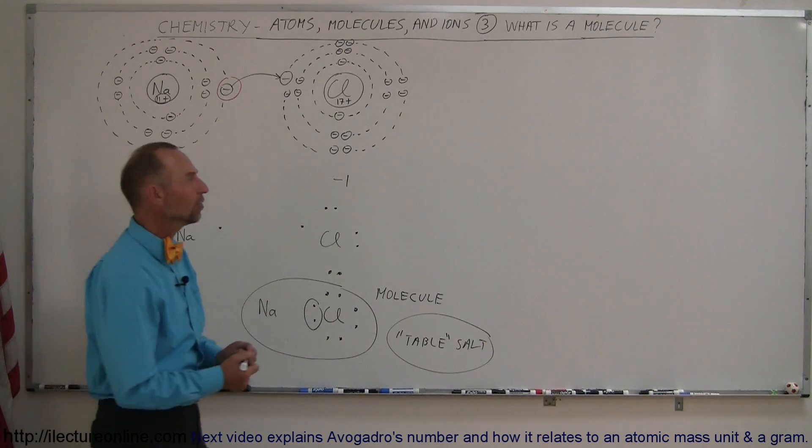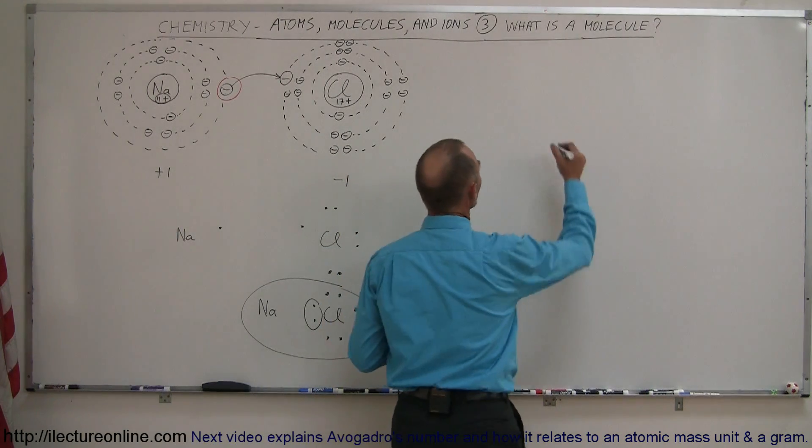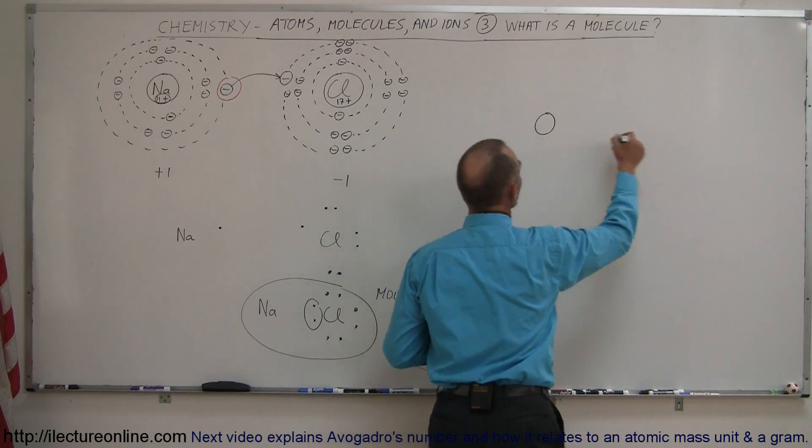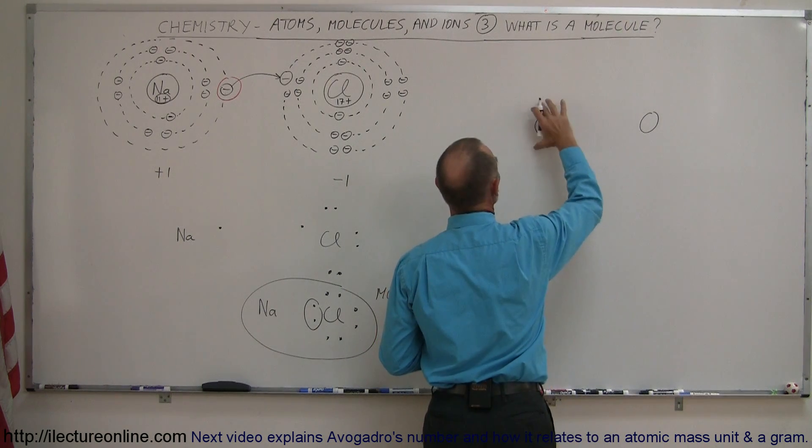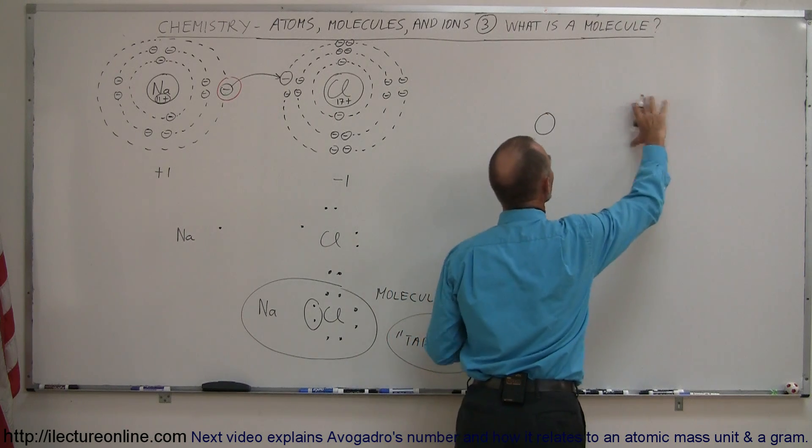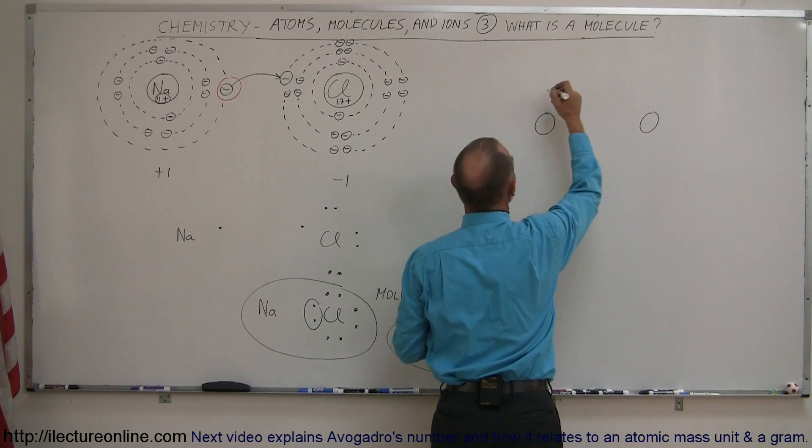Now, there's other kinds of ways in which atoms bond together, for example, let's say we have an oxygen atom, here's another oxygen atom, there's O for oxygen, and in the outermost level, of course, we have two electrons in the inner level, then we have the second level with six electrons.